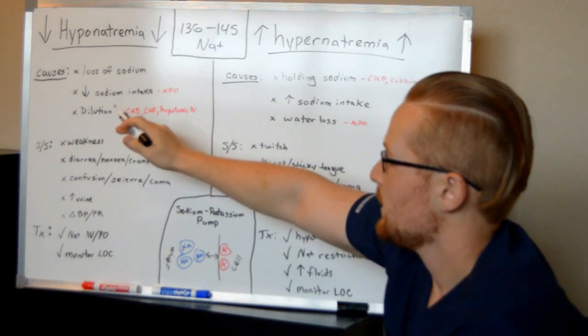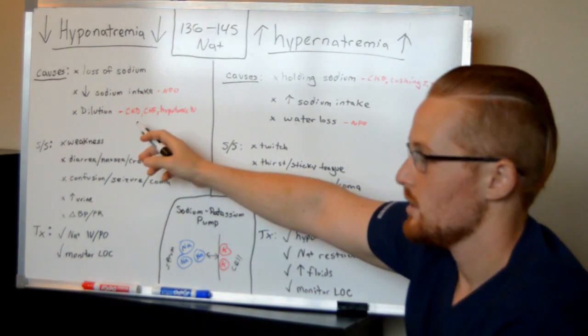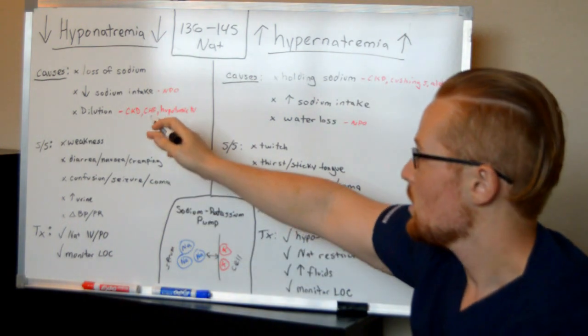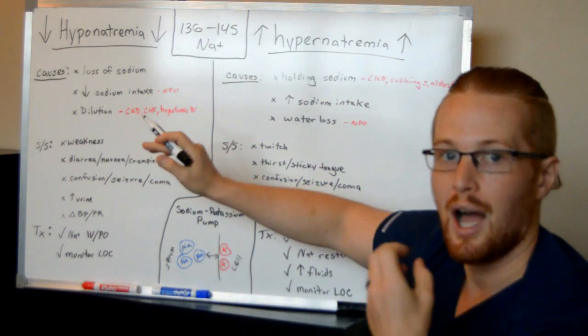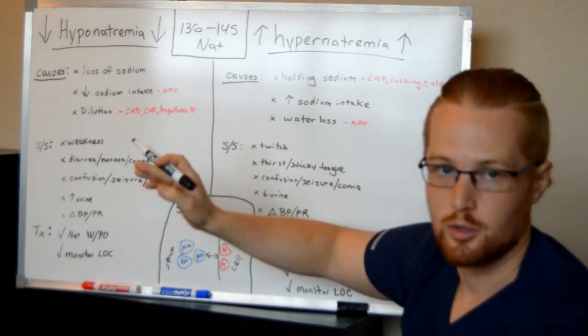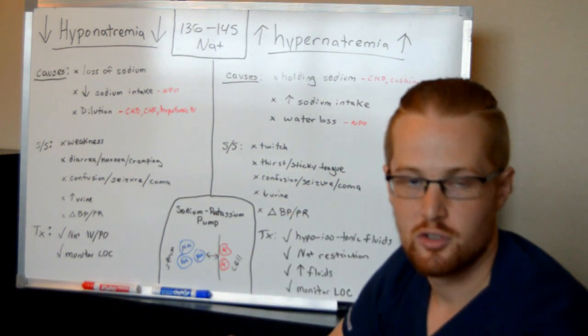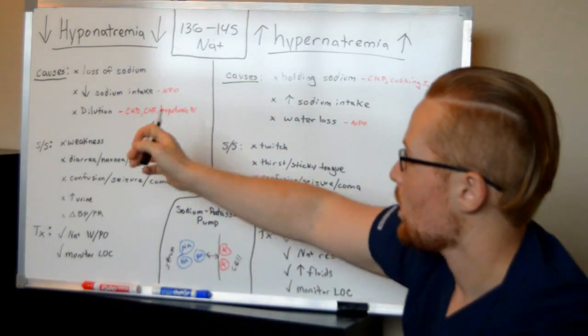Hyponatremia could be caused by dilution, such as chronic kidney disease, you're holding on to fluids. Heart failure, you're holding on to fluids. Or if you're just getting a lot of IV hypotonic fluids, this would be like half normal saline or D5W. There's not enough salt in it and there's just a lot of water in the patient.